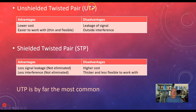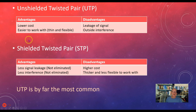Here are the advantages and disadvantages. Unshielded twisted pair does cost less — you don't have that extra shielding. It's thinner, easier to work with, more flexible. However, it does leak some of the signal, and a bad actor could tap into that using a device that can detect electromagnetic signals outside of the wire. It's also prone to outside interference from motors, microwaves, other radios, and so on. With shielded twisted pair, it does cost more and is a little less flexible, but you have less interference and signal leakage — not eliminated, but less. UTP, or unshielded twisted pair, is by far the most common.